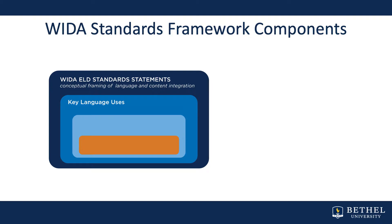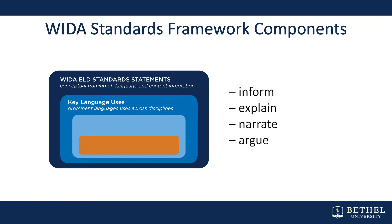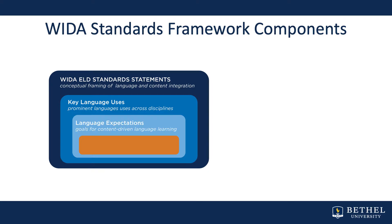The second level is key language uses: inform, explain, narrate, and argue. These help us focus instruction not on vocabulary, but on the purposes for language use. As we learn science, we learn to inform, to explain how or why things work, to narrate stories or experiences as we engage in learning, and to argue — which is to construct claims and provide evidence for our claims.